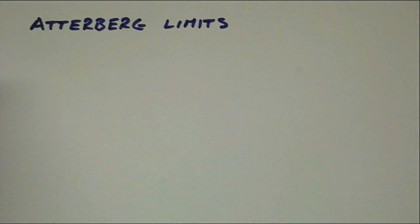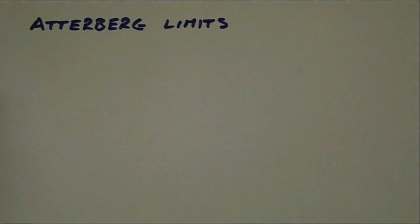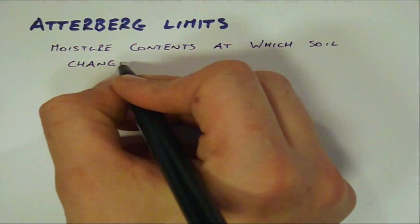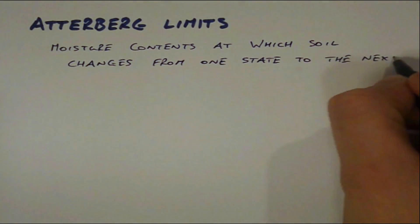If however, the soil contains silt and clay, then additional tests known as the Atterberg limits must be performed to complete the classification. The Atterberg limits are simply moisture contents at which the soil changes consistency or moves from one state to the next.